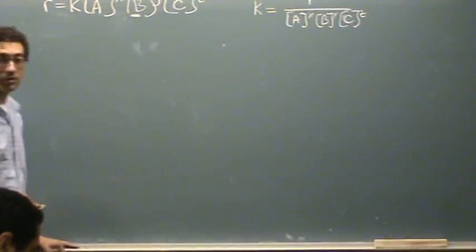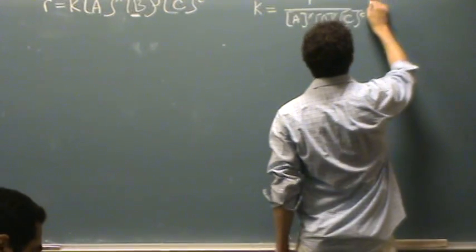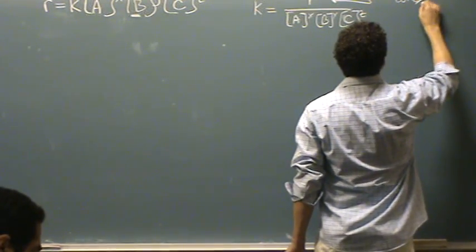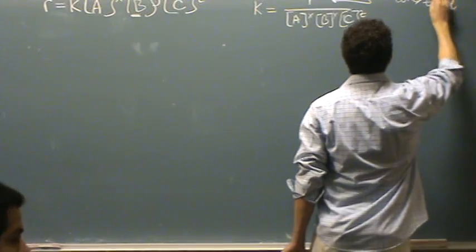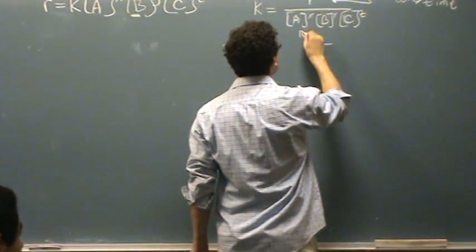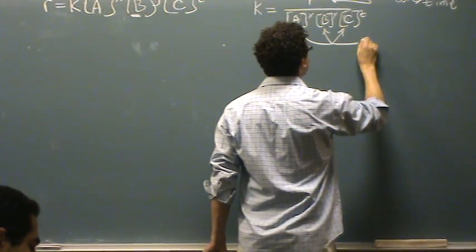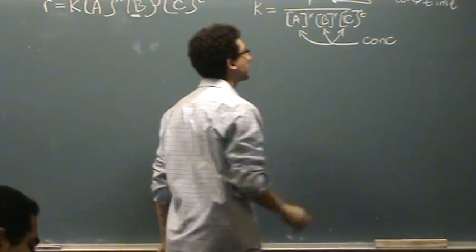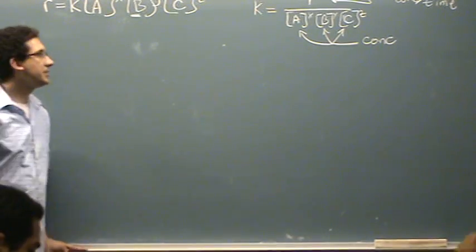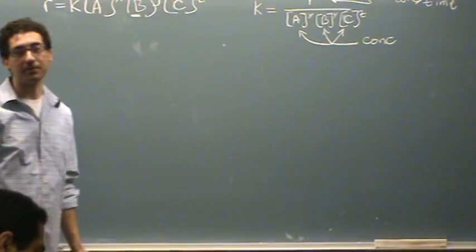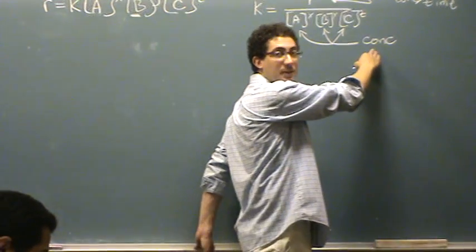Okay, so usually the rate is in a concentration per time, and then usually each of these are in a concentration unit. So you just need to find out what's the total concentration on the bottom. It's related to the overall order, so if the overall order is 6, this would be concentration to the 6th power.